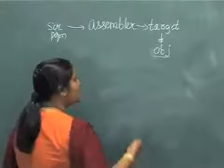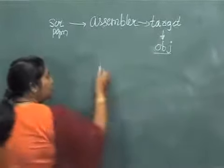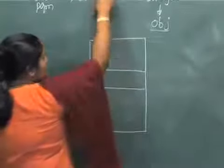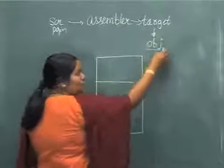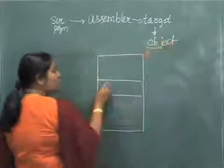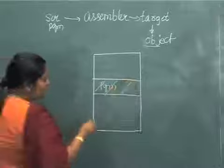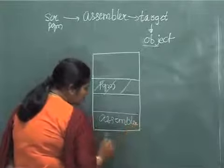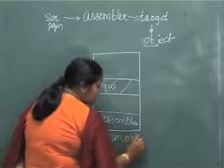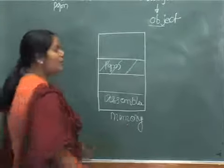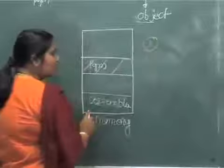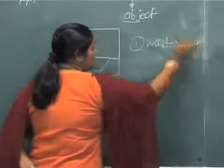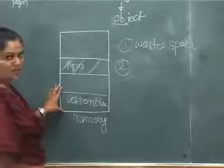One way to put this object code into memory was to have the assembler itself do this function — the assembler would take the object code it produced and load it into memory. But to do this, the assembler itself should be placed in memory, occupying some space. This scheme works, but there are two problems: first, your assembler occupies space, wasting memory because the amount of space occupied by an assembler is huge.